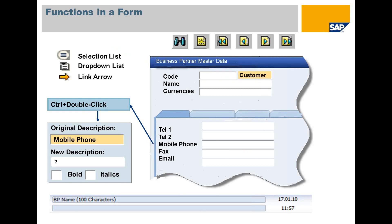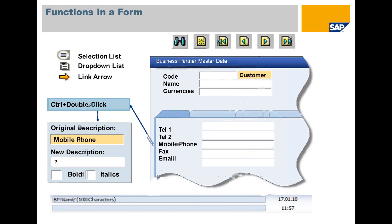SAP Business One offers two input tools: a selection list and a drop-down list. The selection list — choose the icon to the left of the field to open a new window with a list of all possible entries. The drop-down list — choose the icon to the right of the field to open a drop-down list with all possible entries.